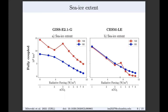Looking at sea ice extent as a function of radiative forcing: in GISS, Northern Hemisphere sea ice extent decreases from PI to 2x CO2, then increases between 2x and 3x CO2 — sea ice extent is actually higher at 3x CO2 than at 1.5x or 2x — then decreases at higher forcings. In the Southern Hemisphere, there's a non-monotonic decrease. Similarly in CESM, except the kink occurs between 3x and 4x CO2.